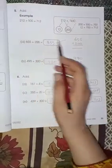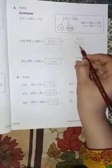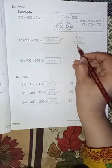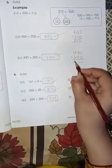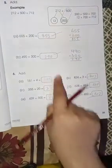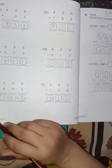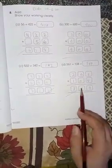Page number 33: 55 plus 200 becomes 255. 490 plus 300 becomes 790. These are simple addition with larger numbers. Moving to page number 34, again simple addition.